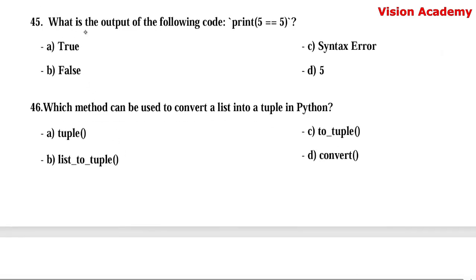Question number 45. What is the output of the following code: print(5 == 5)? Option A: True. Option B: False. Option C: syntax error. Option D: 5. We have used the relational operator double equal-to (==). Since 5 equals 5, the result is True. Hence, option A — True — is the right answer.